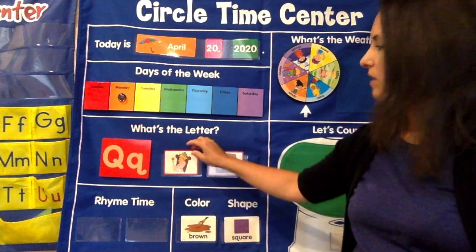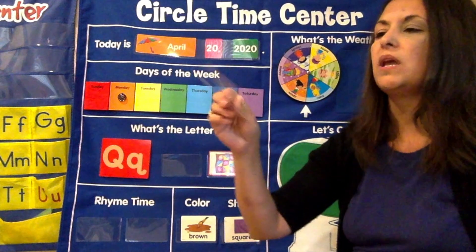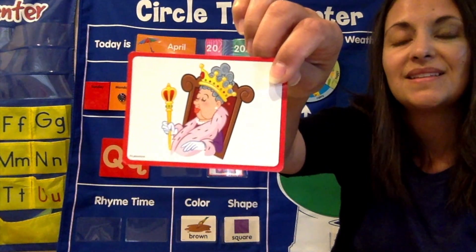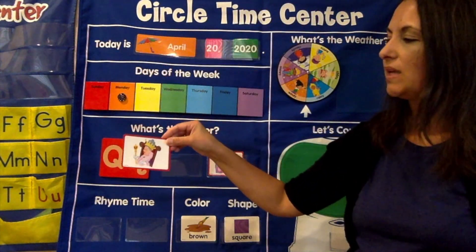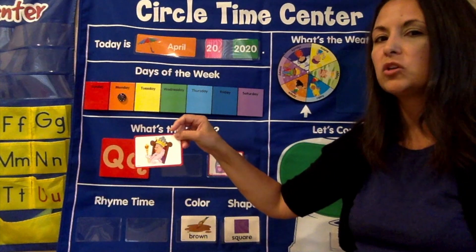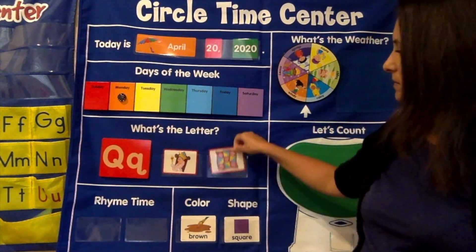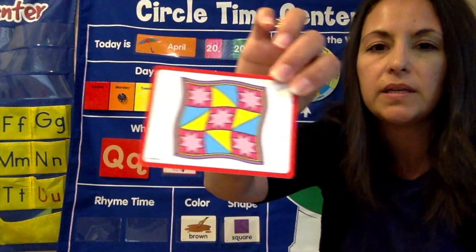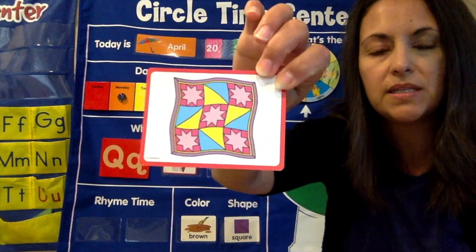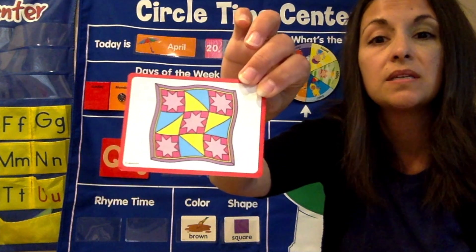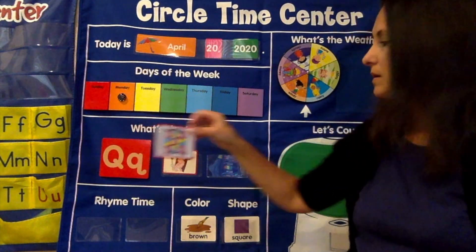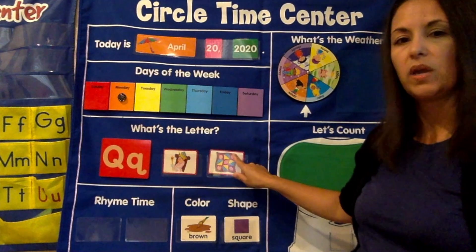Let's look at our picture cards today and see what pictures we have. What is that? Who is that? That's a queen. QU — do you hear it? Queen starts with the letter Q. What else is over here? That one's a hard one. It looks like a blanket, and it's a special kind of blanket because it has squares on it. It's called a quilt. Some of you might have a quilt at home — it's a special blanket that has all different squares on it.